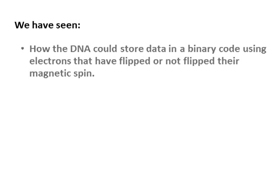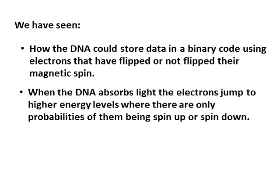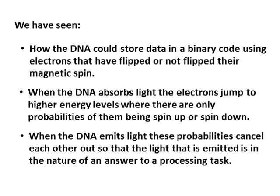So now we have seen how the DNA could store data in a binary code using electrons that have flipped or not flipped their magnetic spin. We have also seen that when the DNA absorbs light, the electrons jump to higher energy levels where there are only probabilities of them being spin up or spin down. And finally, we have seen that when the DNA emits light, these probabilities cancel each other out, so that the light that is emitted is in the nature of an answer to a processing task. This is optical quantum computing.